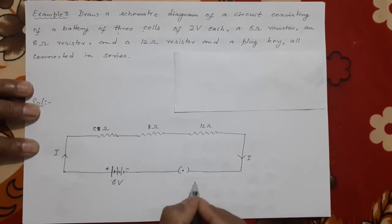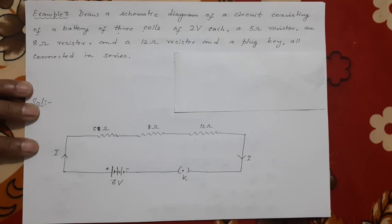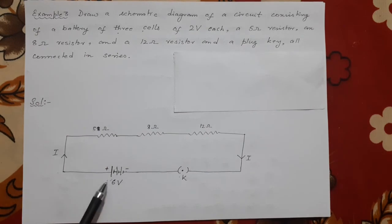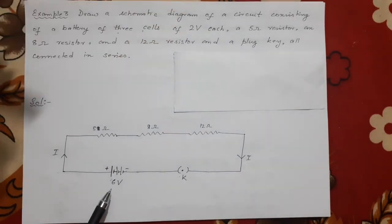Current will go in from this direction, it will come back from here. It will be I here. The key is represented by K generally, so you can write K or simply K-E-Y, key also you can write.